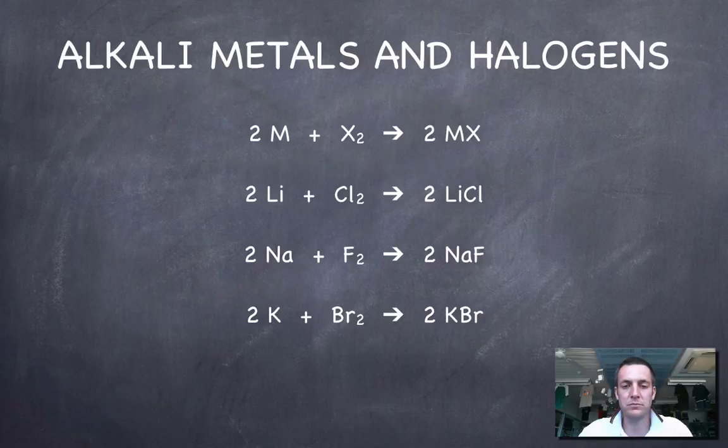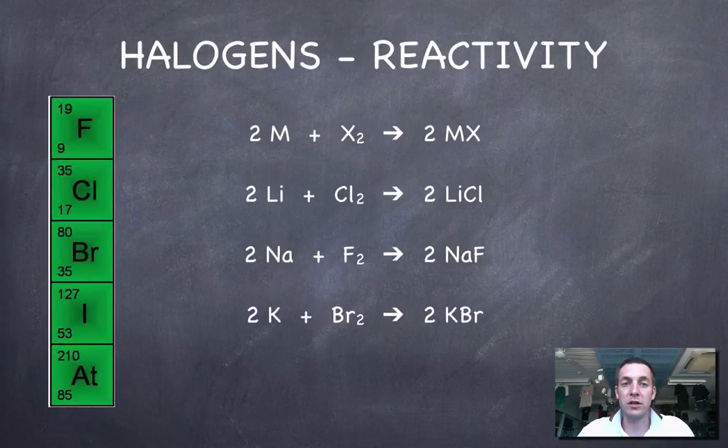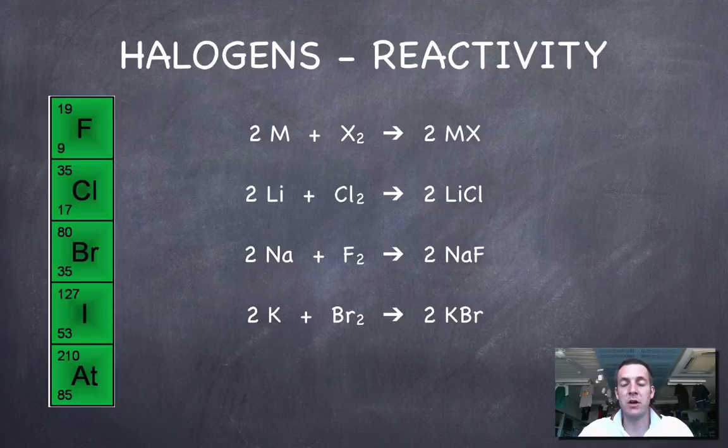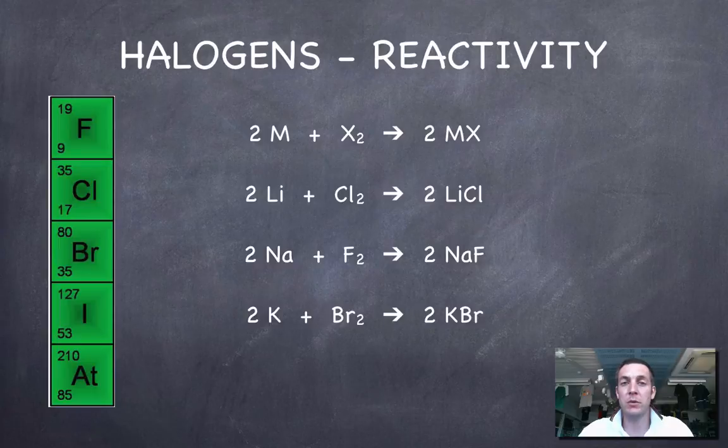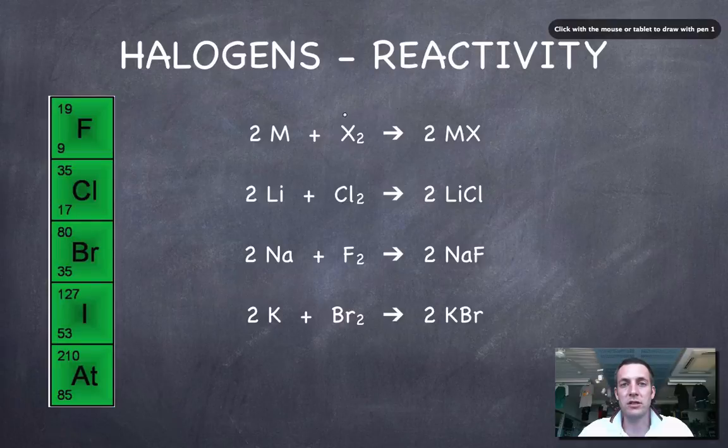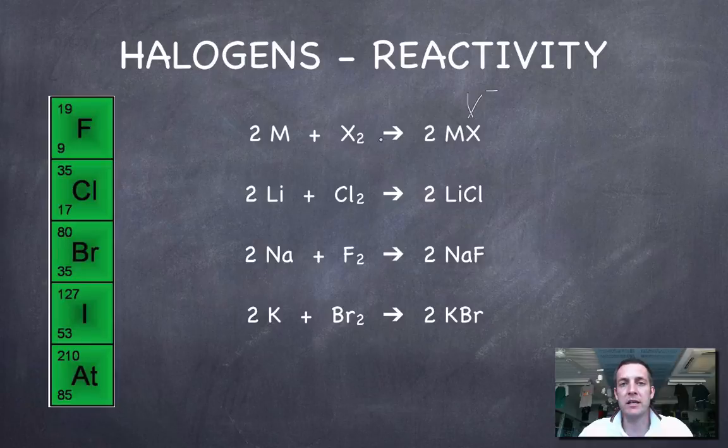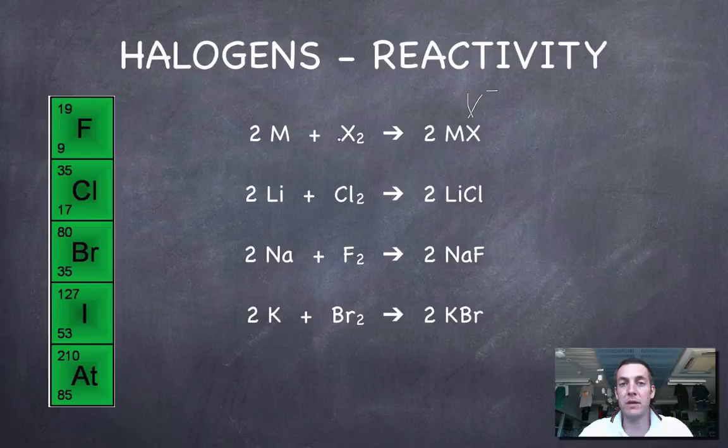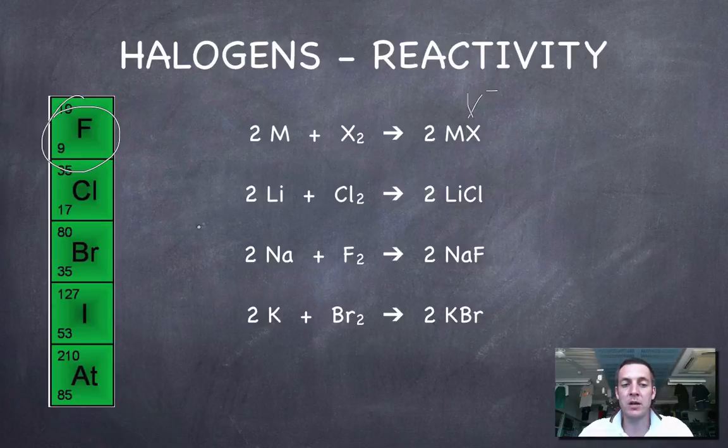We could also decide which of the halogens is most reactive, but we're not going to use ionization energy for this. Halogens aren't losing electrons in these reactions, they're gaining electrons. How readily this will happen for a halogen depends on how strongly it attracts electrons. We've got a measure of this called electronegativity. Fluorine is the most electronegative element in the whole periodic table, so electronegativity is rising up a group.